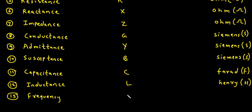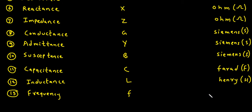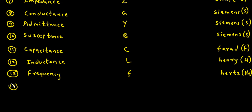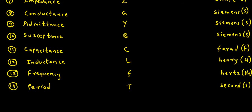Quantity: Frequency. Symbol: small f. Basic Unit is Hertz, denoted by Hz. Quantity: Period. Symbol: capital T. Basic Unit is second, denoted by small s.